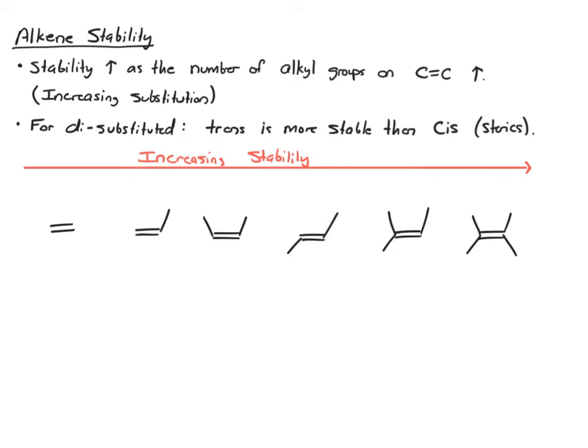Now remember that every alkene is going to have four total things attached. But in this first one, the four things that are attached are just hydrogens, and you can draw those in. When we talk about substitution on an alkene, don't include hydrogens. So for this first one, since all four things on that alkene are hydrogen, we would just say that this alkene is unsubstituted.